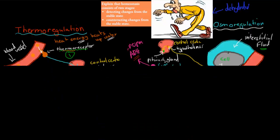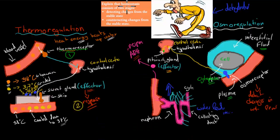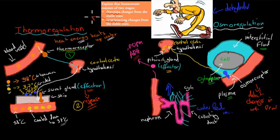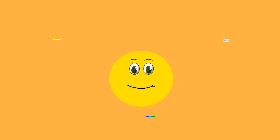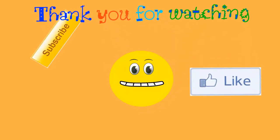Hopefully that animation was useful. When it comes to this dot point, remember: explain that homeostasis consists of two stages. Detection — being able to detect the change; if we can't detect it, we can't change it back to normal. And the second part is bringing it back to normal once we've detected it — that's called counteracting, or another word often used is the response. So detection and response. I hope that was useful. Thank you for watching.